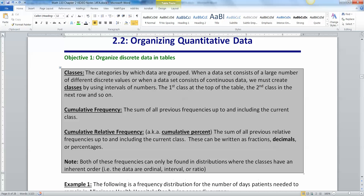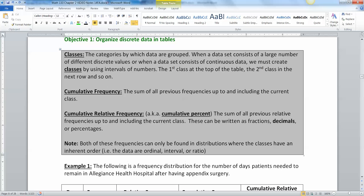Now the cumulative frequency is the sum of all frequencies up to and including the current class. The cumulative relative frequency is the sum of all previous relative frequencies up to and including the current class. You can write those as decimals, fractions, or percentages, but decimals are more useful to us. Keep in mind that cumulative frequency and cumulative relative frequency can only be found for distributions where the classes have an inherent order. So you can't do this with nominal data. It has to happen where the data has an order, from lowest to highest.